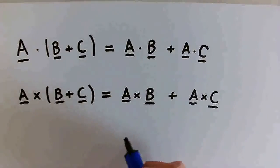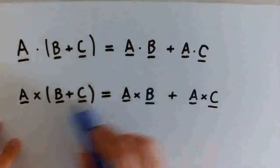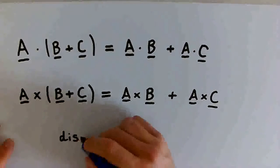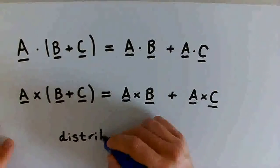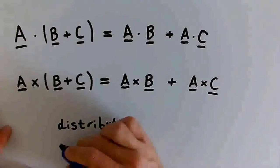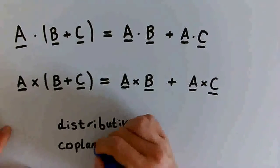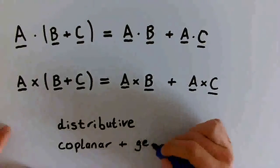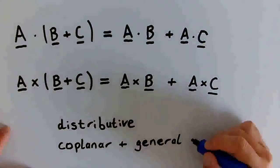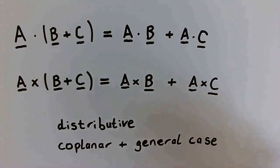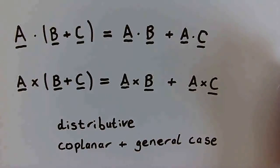To sum up, we have proved that both the dot product and the cross product are distributive for the coplanar and the general case. Thank you for watching the video, and comment down below if you have any questions.